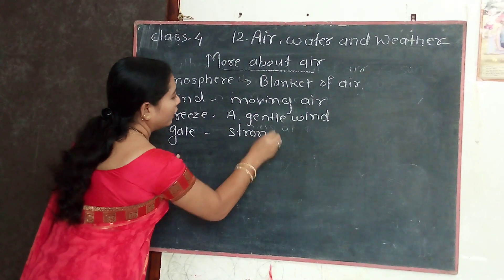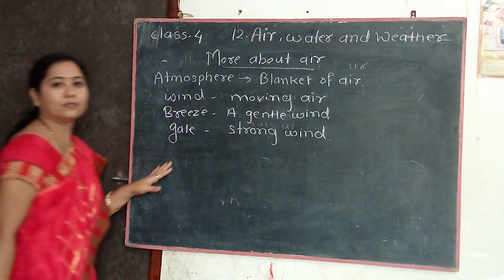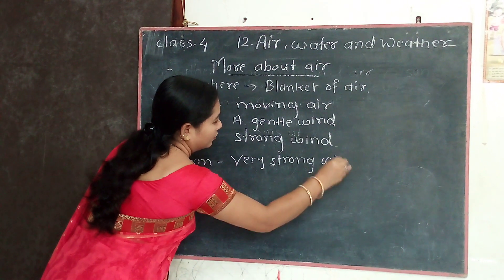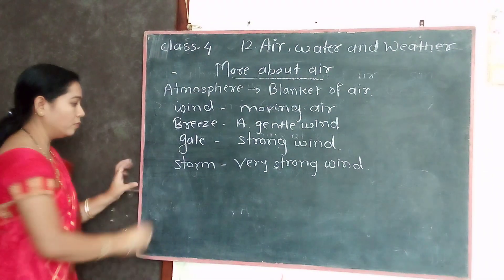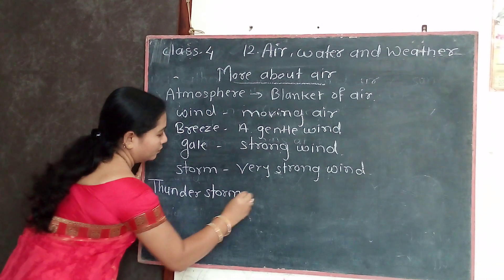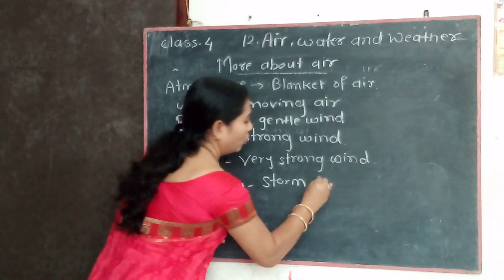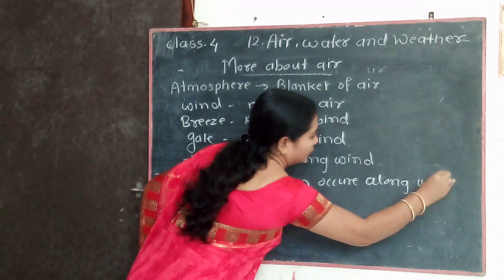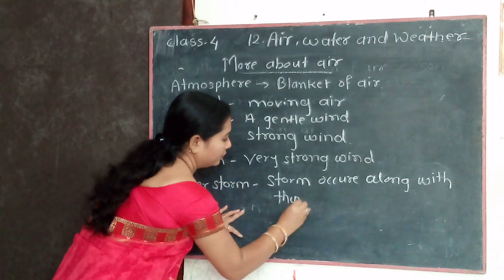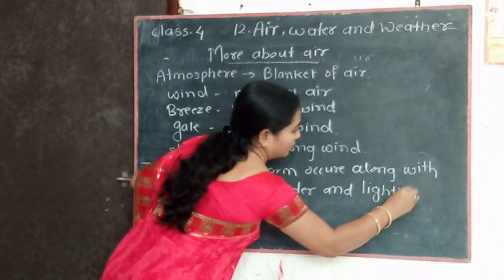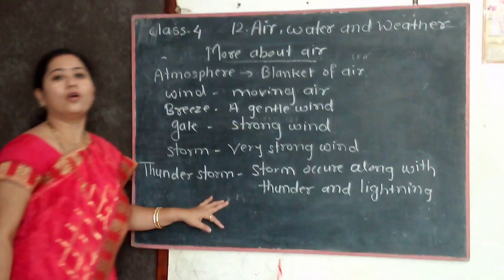Strong wind is called a gale. Very strong wind is called a storm. A storm along with thunder and lightning is called a thunderstorm.